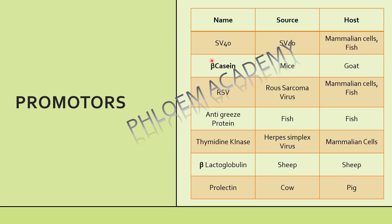Next is beta casein. Beta casein is obtained from mice and can be used in goat. Next is RSV — Rous Sarcoma Virus. RSV is obtained from Rous Sarcoma Virus and can be used in mammalian cells and fish. So from here it is clear that the promoters which can be used in mammalian cells and fish are SV40 and RSV.